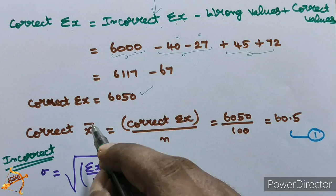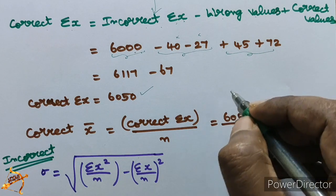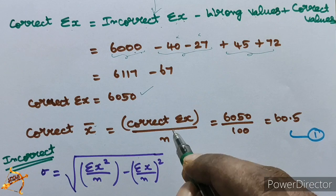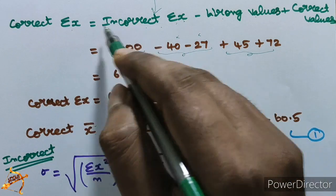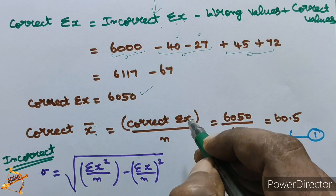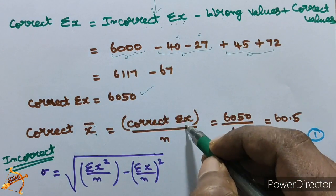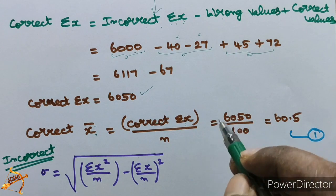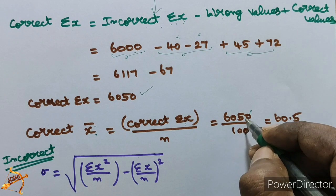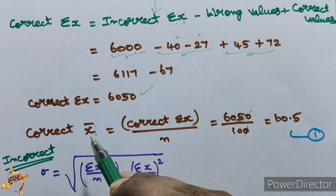Now we find the correct mean. Correct x̄ = correct Σx / n = 6050 / 100 = 60.5. So the correct mean x̄ = 60.5.